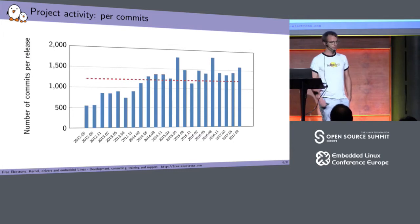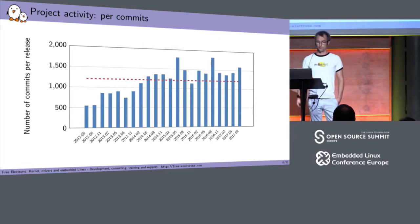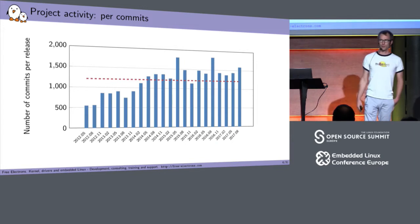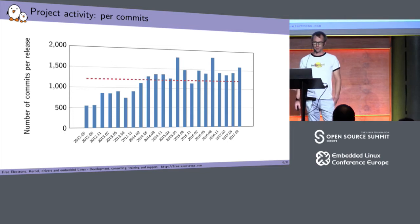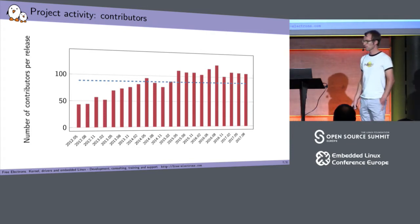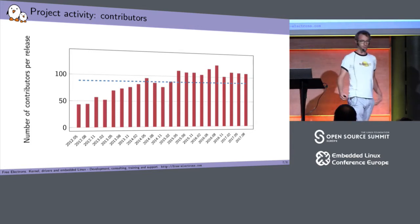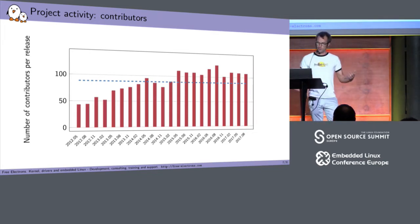Moving on to project activity: this shows the number of commits per release. For every release we get approximately between 1,000 and 1,500 commits, and as I said we produce a release every three months, so it's a fairly active project. The contributor numbers are about 100 people contributing to each release — nowadays a little bit more, 110 or 120 sometimes contributing every three months. It's a different scale from the Linux kernel, but it makes it a fairly active medium-sized open source project.